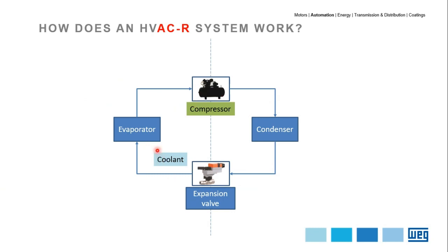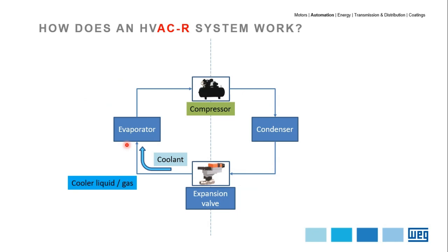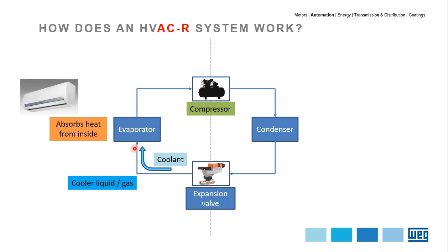Inside of the circuit there is a special gas called coolant, which is a refrigeration gas that changes dramatically in temperature and state as it goes through these stages. Starting after the expansion valve, the coolant is cool liquid and partially gas. Once it hits the evaporator — which is basically a serpentine coil — the coolant absorbs heat from the inside. It evaporates, as the name says, absorbing heat from the inside to transport outside.